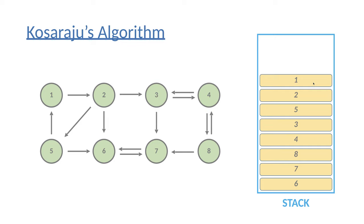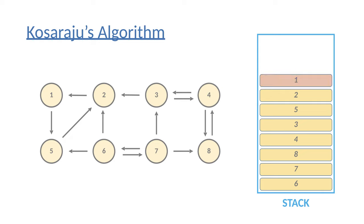This is the topological order, exactly what we covered in a previous chapter. After that, we generate the transpose of the original graph by reverting every single edge. Then we pop the items one by one from the stack and perform the second depth-first search. The first item on the stack is vertex one, so we start with vertex one and do a standard depth-first search. Every vertex reachable in the transpose graph from vertex one will form a single strongly connected component.